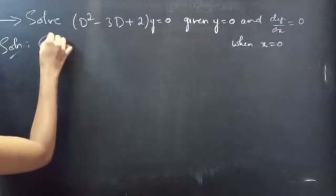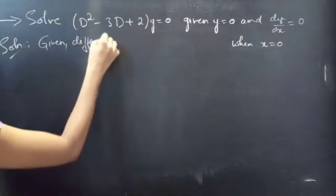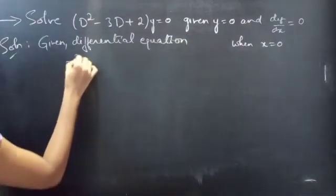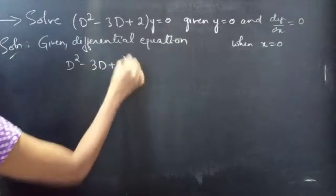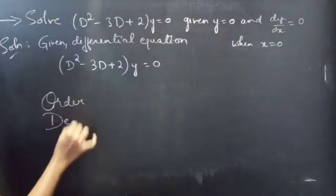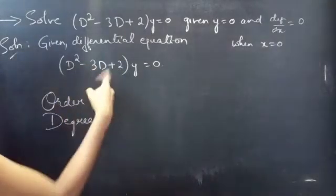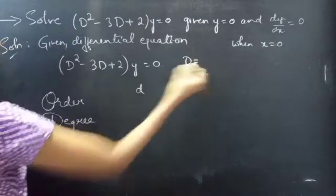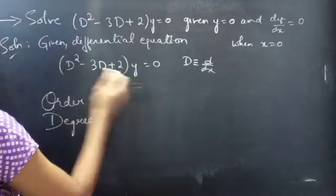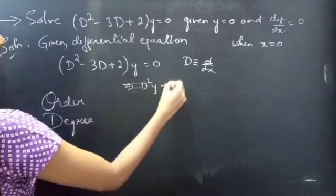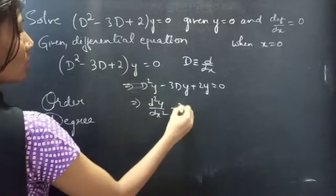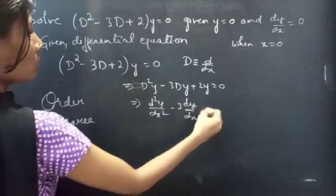Given differential equation: (D² - 3D + 2)y = 0. Here D is a differential operator. We can write the above equation as D²y - 3Dy + 2y = 0, which gives us d²y/dx² - 3(dy/dx) + 2y = 0.